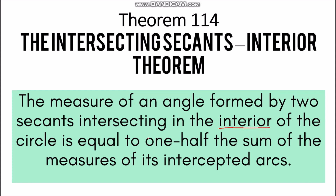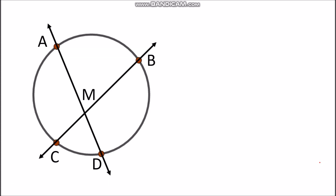To get the measure of the angle formed by two secants intersecting inside the given circle, you just have to get one-half the sum of the measures of its intercepted arcs. To illustrate, let's have this figure. We have line AD and line CB, which are secants that intersect at one point, which is point M.